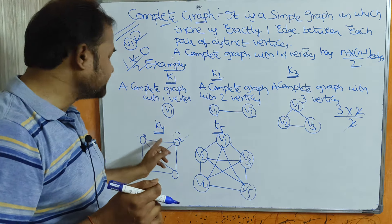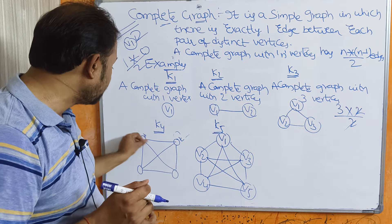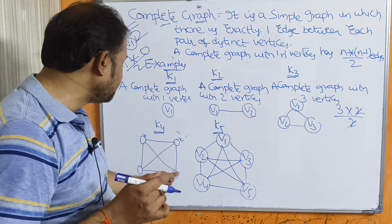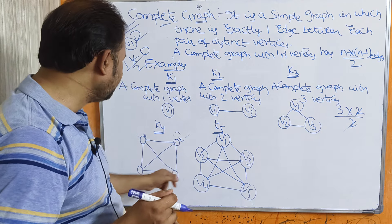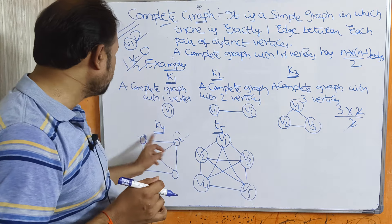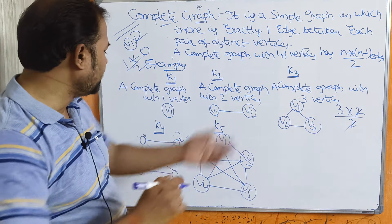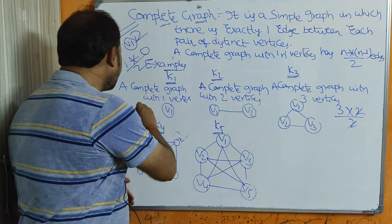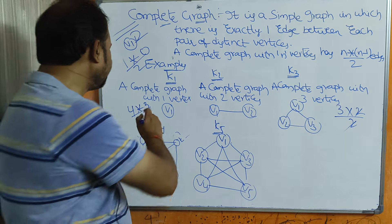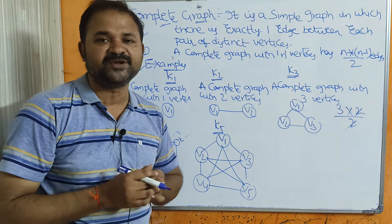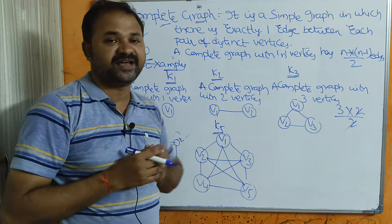K4 is a complete graph with 4 vertices. From V1 we have edges to V2, V3, and V4. From V2 to V3 and V4, and from V3 to V4. Using the formula: 4×(4−1)/2 = 4×3/2 = 6 edges. Totally we have 6 edges.